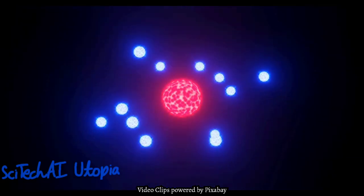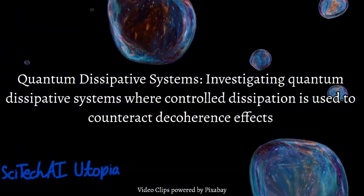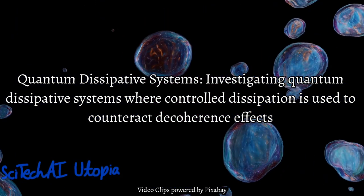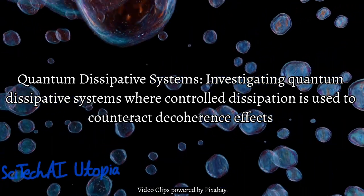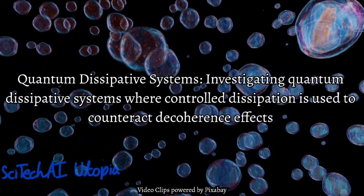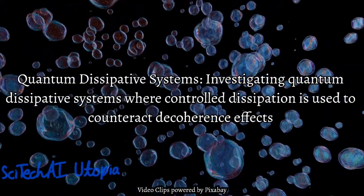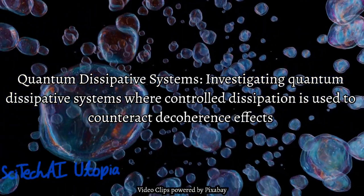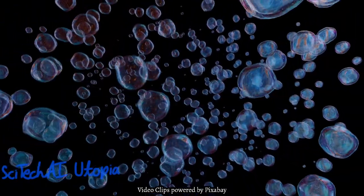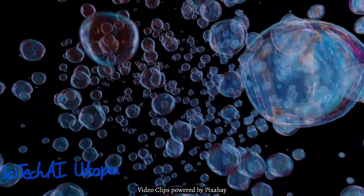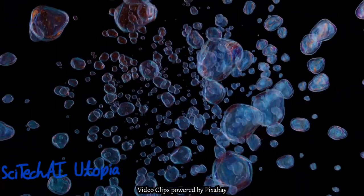Solution 23: Quantum Dissipative Systems. Quantum dissipative systems involve controlled interaction with the environment to counteract decoherence. By engineering dissipation channels, researchers aim to redirect unwanted quantum information out of the system, effectively mitigating the impact of environmental noise on quantum states and prolonging coherence times.